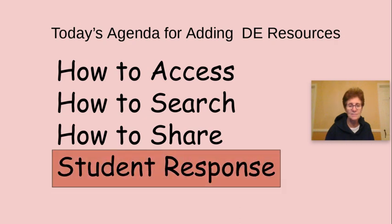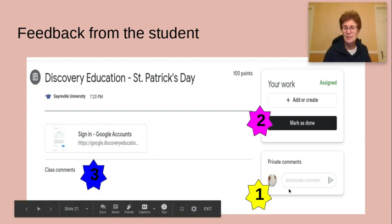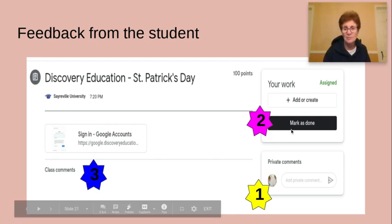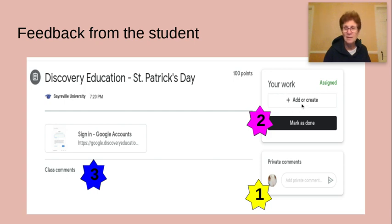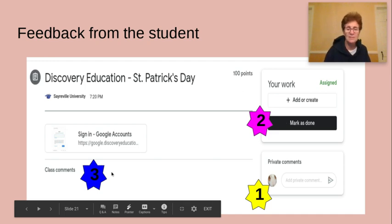Let's look at response — there are three options. First, once they've watched the movie, they can send you a private comment. Private means it will come back only to you. Second, they can mark it as done — "Yes, I watched the movie." You could also have them add and create work, though depending on how old your students are, you might not want to consider that yet. Or, they could go to class comments at the bottom — if they type something there, everyone will see it. For younger students, maybe a private comment or marking as done is best, so you know they watched the video.